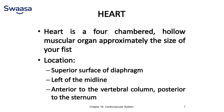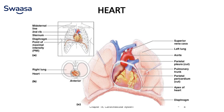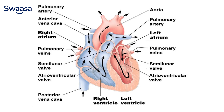Coming to the heart, the heart is a four-chambered hollow muscular organ approximately the size of the owner's fist. Location: superior surface of the diaphragm, left of the midline, anterior to the vertebral column, posterior to the sternum. The heart mainly contains the aorta, pulmonary artery, left atrium, and pulmonary veins.